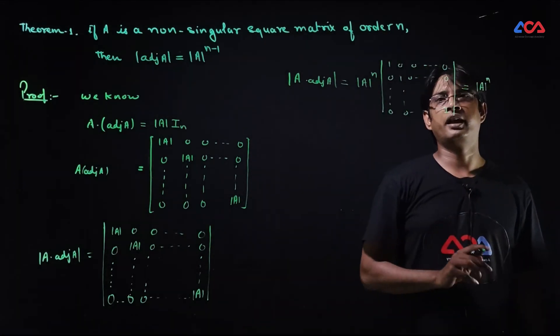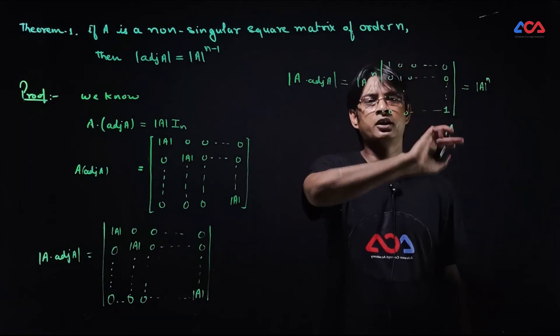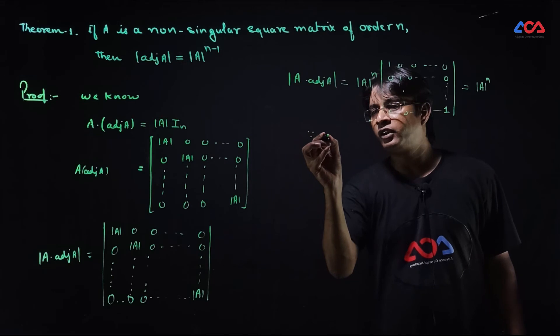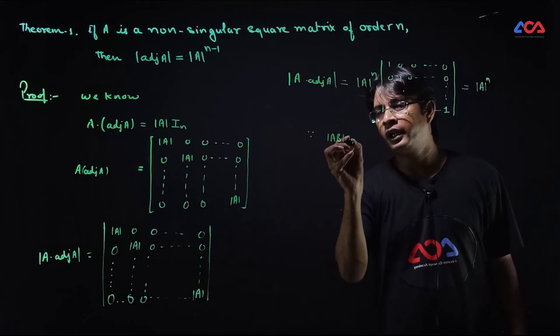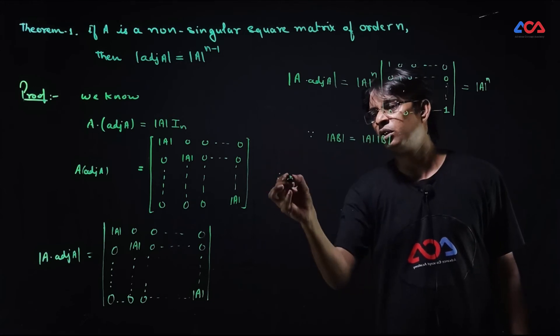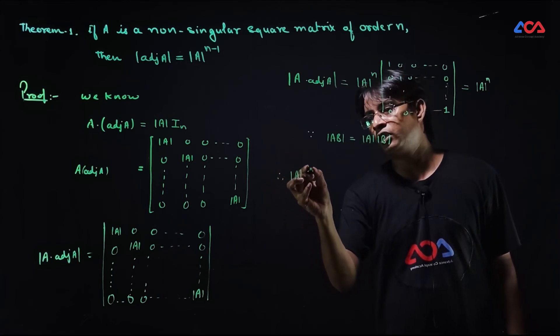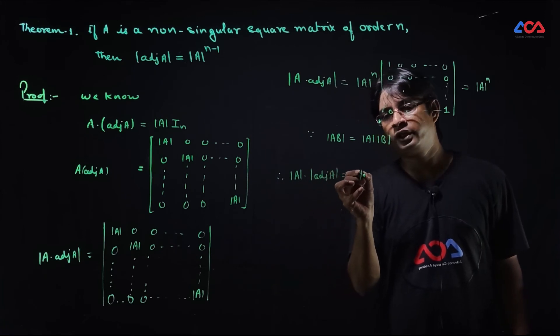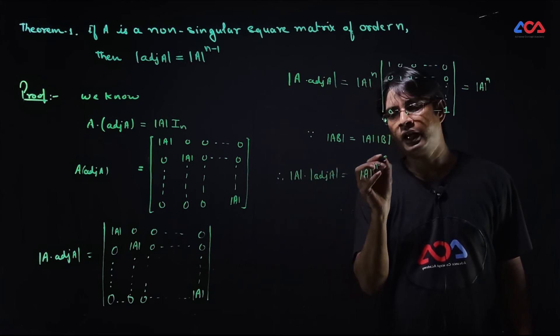By the property that determinant of AB equals determinant of A times determinant of B, we have determinant of A into determinant of adjoint of A, which is equal to determinant of A to the power n.